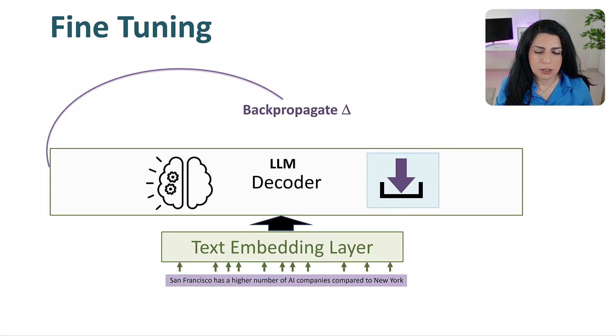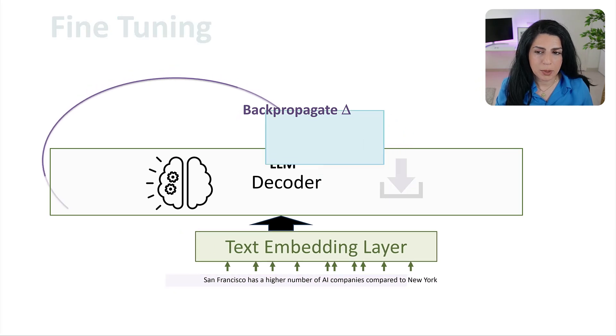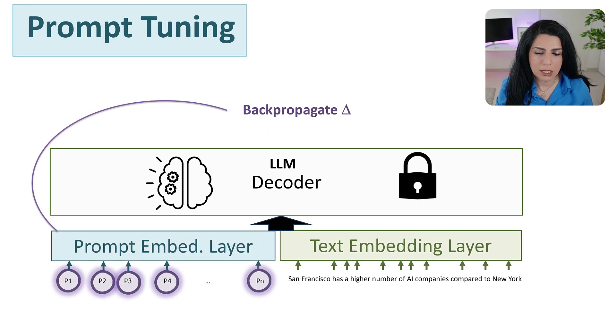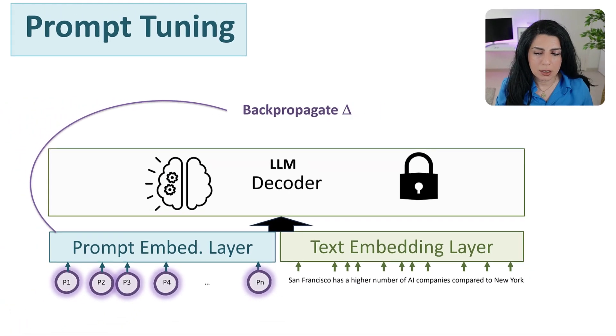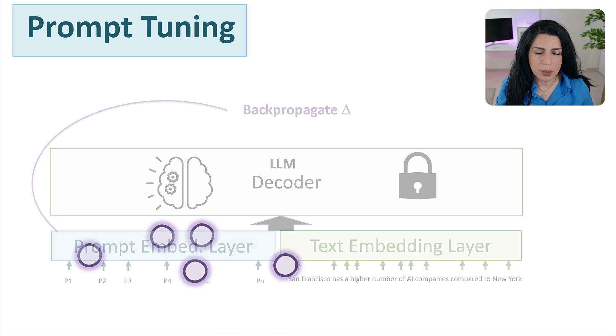Let's compare it with fine-tuning. In fine-tuning, you will give that example to the text embedding layer and the model itself will be actually updated. But in prompt tuning, you never touch the model. The model is completely locked, and what you do is basically update that prompt embedding layer.